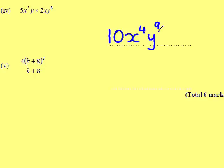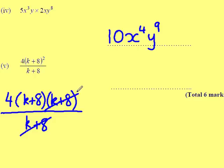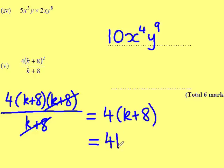This is similar to the question we had earlier on. We rewrite this as 4 lots of K plus 8 once, and because it's squared it means it's K plus 8 again, all divided by K plus 8. I can cancel one of the bottom ones with one from the top, leaving me with 4 lots of K plus 8. Remember not to forget to multiply out the brackets, so your final answer will be 4K plus 32.